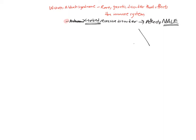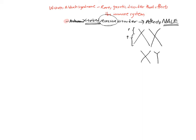Just to recap on X-linked genetics: imagine the X chromosomes — there's a short arm and a long arm. In females there are two X chromosomes, and in males there is one X and one Y. The fact that it is recessive means it needs both copies of this gene to manifest clinically. So having two recessive copies is much rarer in females than in males, who only require one copy to manifest symptoms. This gene mutation is found on the X chromosome, specifically on the short arm at the 11-23 position.